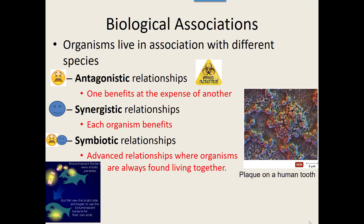One type is antagonistic relationships. These are two organisms that live together where one benefits from that relationship and one does not — one benefits at the expense of another. An example is viruses: viruses benefit from living inside a cell, but the cell does not — it is harmed in some way.